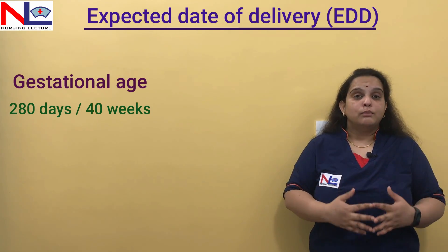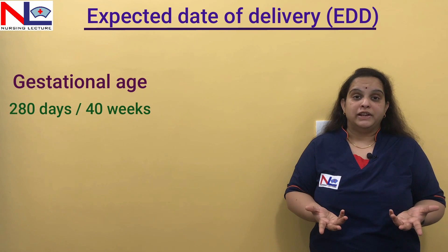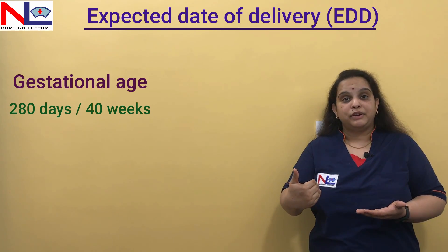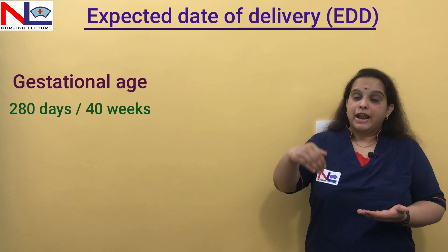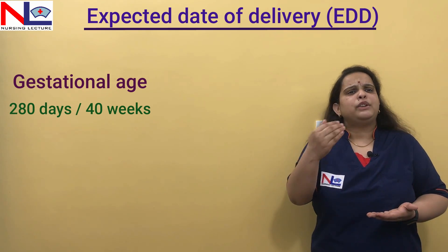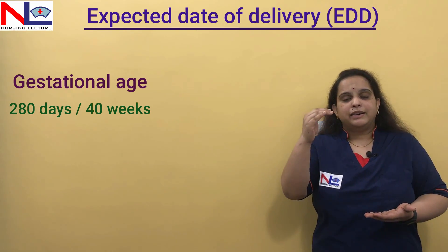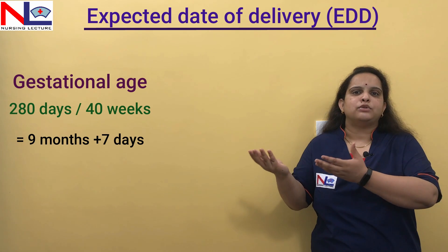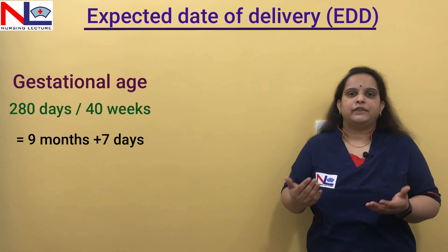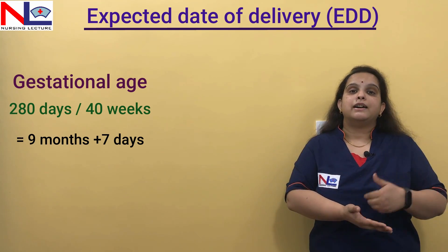It is almost impossible for every woman to know exactly when she ovulated. However, she can easily remember the date her last menstrual period started. From that date, we calculate nine months and seven days. When you verify this manually on a calendar, nine months and seven days automatically equals 280 days or 40 weeks — the actual gestational period. That is why we calculate from day one of the last menstrual period.